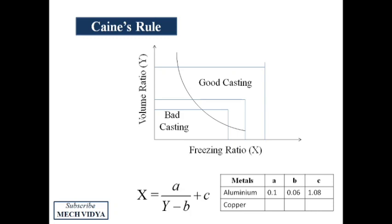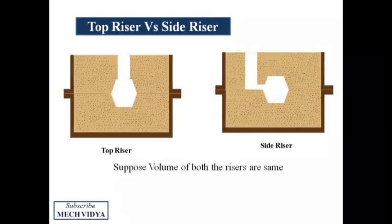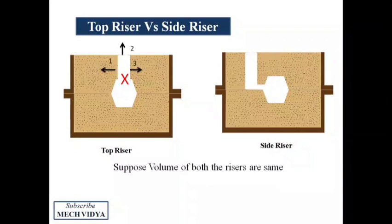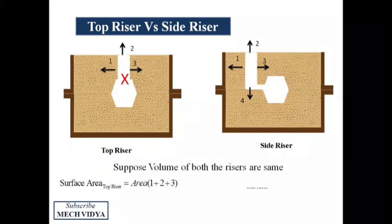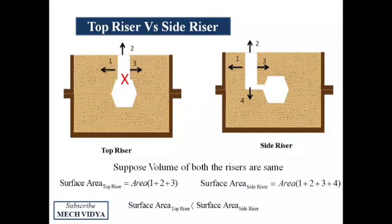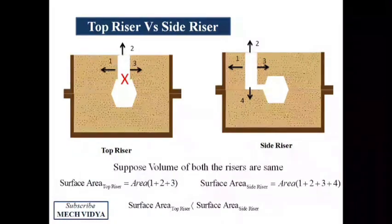Finally, one last thing. Let us do a comparative analysis between the top and the side riser. For the same volume, the top riser will release heat from three sides. The bottom surface will not take part in heat transfer since it is connected to the molten metal. On the other hand, the side riser will release heat from all the four sides as shown. So the surface area of the top risers are usually less than the side risers. And we know that risers should have minimum surface area of heat transfer. So from solidification point of view, side risers will solidify much earlier than the top risers for the same volume.